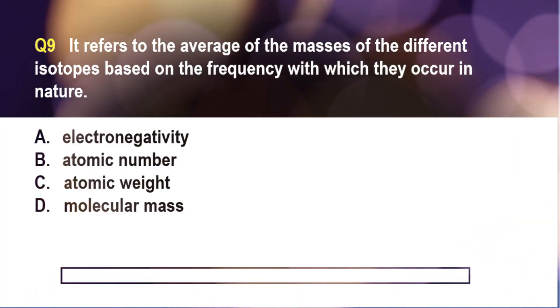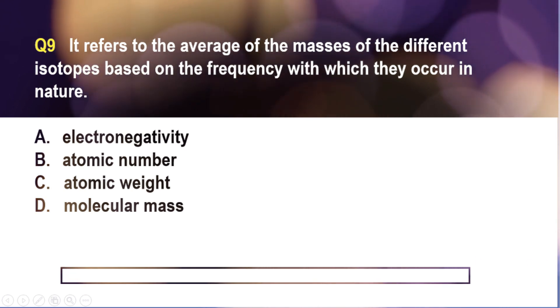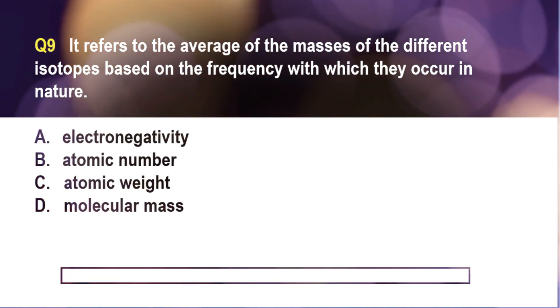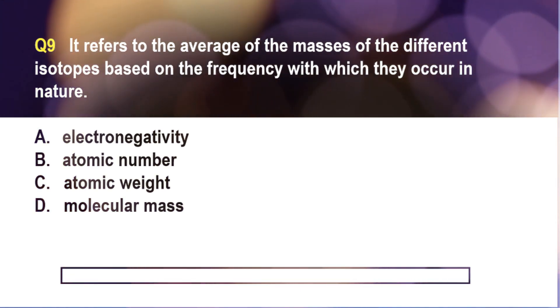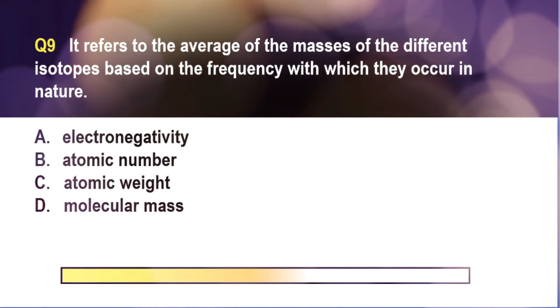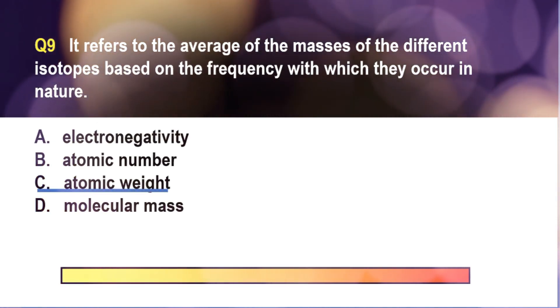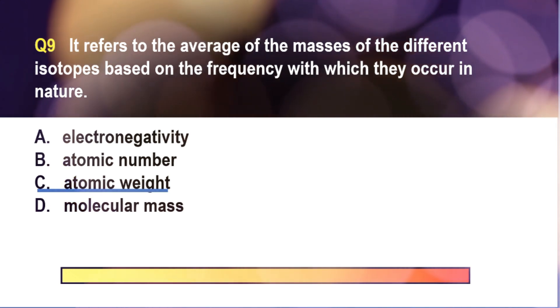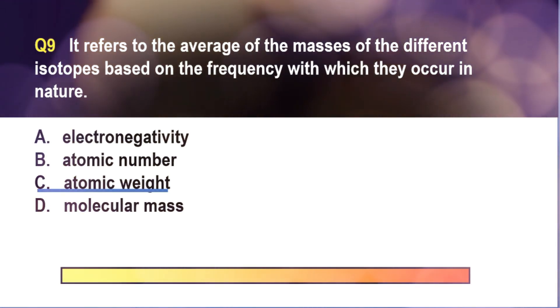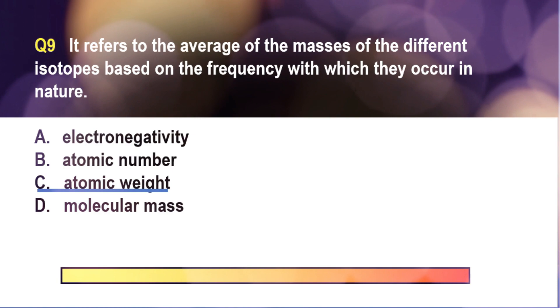The correct answer is letter C. Take note that the existence of isotopes affects the atomic weight. The atomic weight is just the average weight of the common isotopes of the element. And as we have mentioned, the atomic mass or the atomic weight would be a decimal number, whereas the mass number would be a whole number.